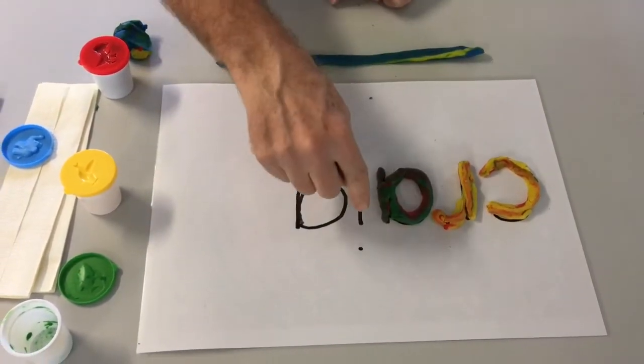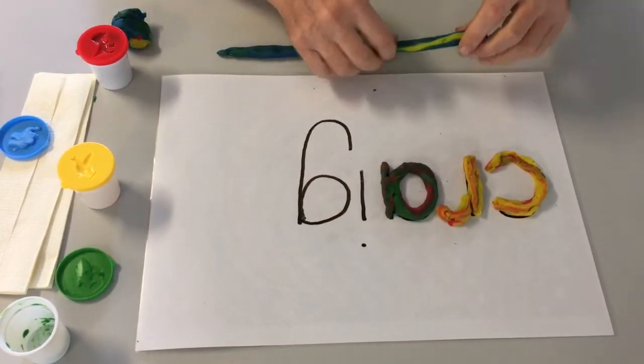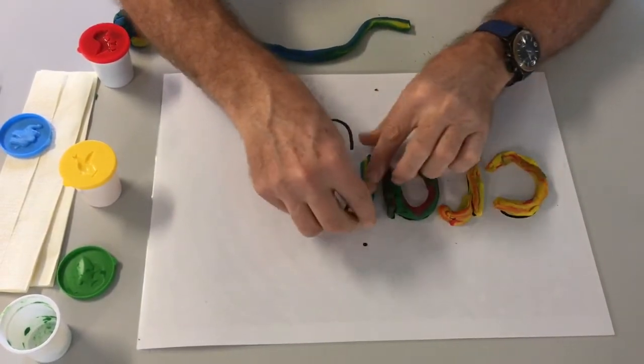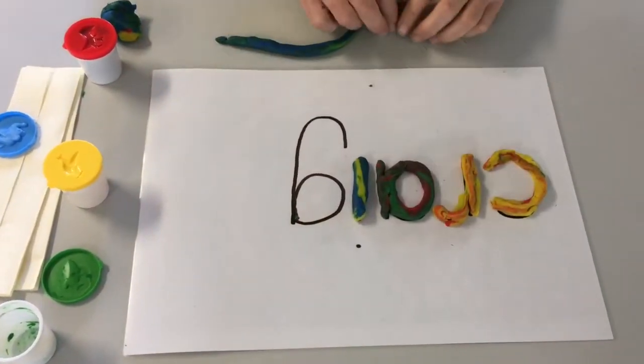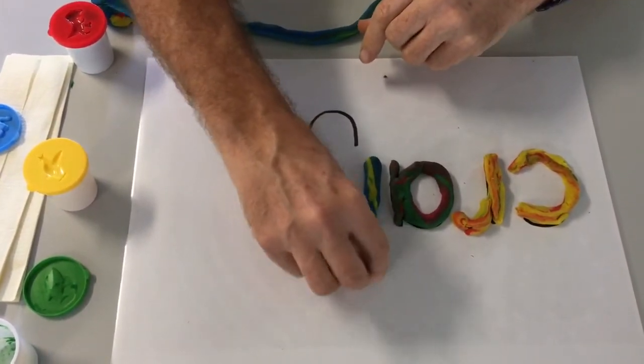Now we want to do I. Straight bit and a dot. So I'm going to measure it here. That should do it, cover the I. And a little bit on the end for the dot.